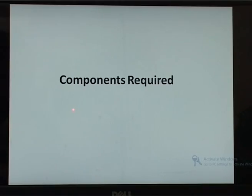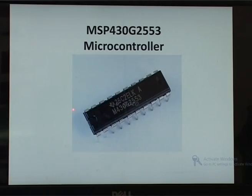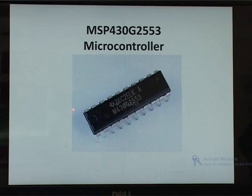Here are the components required for our project. The MSP430 Launchpad is used to dump the program into the microcontroller MSP430G2553. This microcontroller is programmed to convert analog signals into digital signals. It is also used for setting up the threshold temperature values from the IC engine over a period of time, and the corresponding values are displayed on an LCD display.